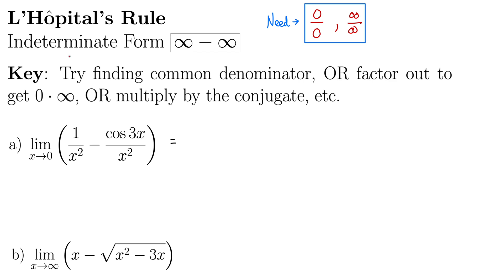So we need to do a little bit more work. When we go to our key it kind of jumps out that we can try finding the common denominator. Sometimes you may start on one route and it doesn't work and then you back up and try something else. But in this case these have the same denominator so let's try a common denominator. If we put that all over x squared we have one minus cos 3x.